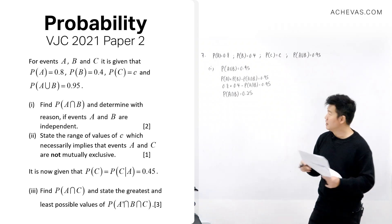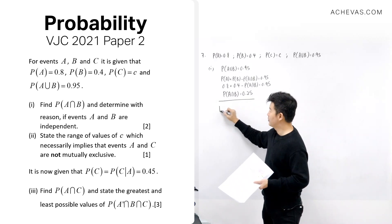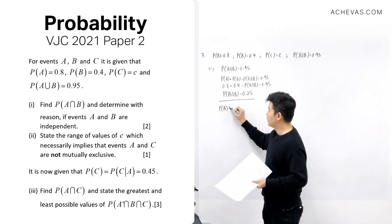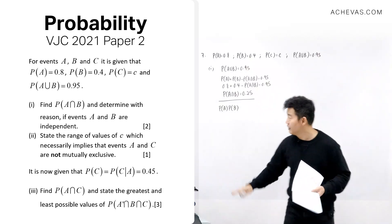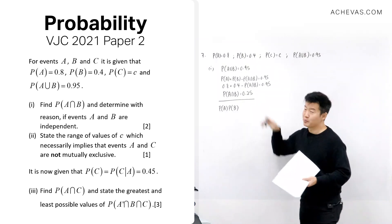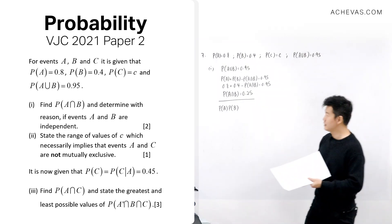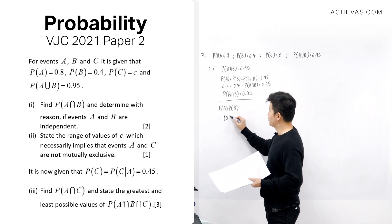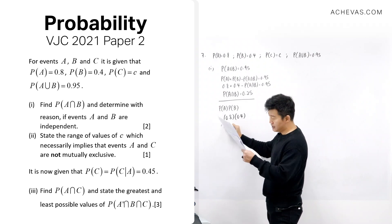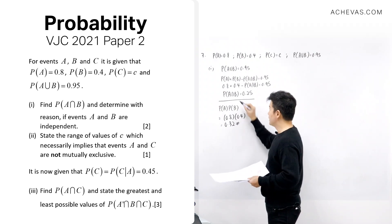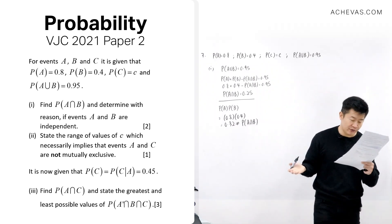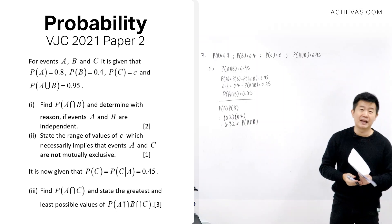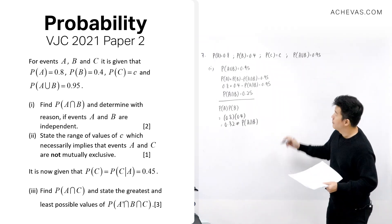Now we check whether A and B are independent. To check independence, we compute P(A) multiplied by P(B), which should equal P(A intersect B) if they are independent. That gives 0.8 times 0.4 equals 0.32, which is not equal to 0.25. So our conclusion is: A and B are not independent.